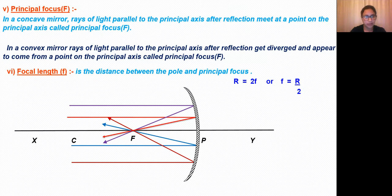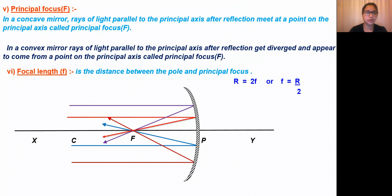Similarly, in a convex mirror, rays of light parallel to the principal axis, after reflection, get diverged and appear to come from a point on the principal axis called the principal focus.